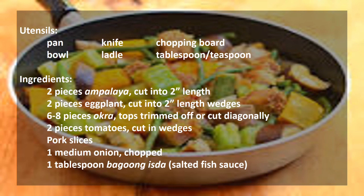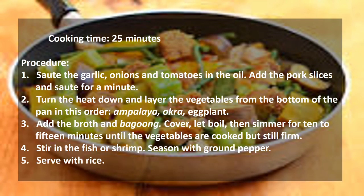The ingredients are: two pieces ampalaya cut into two-inch lengths, two pieces eggplant cut into two-inch length wedges, six to eight pieces okra with tops trimmed off or cut diagonally, two pieces tomatoes cut in wedges, pork slices, one medium onion chopped, and one tablespoon bagoong isda or salted fish sauce. The cooking time is 25 minutes.